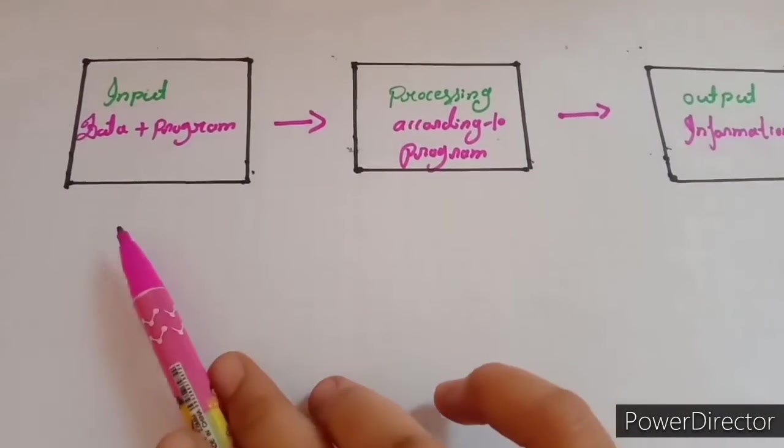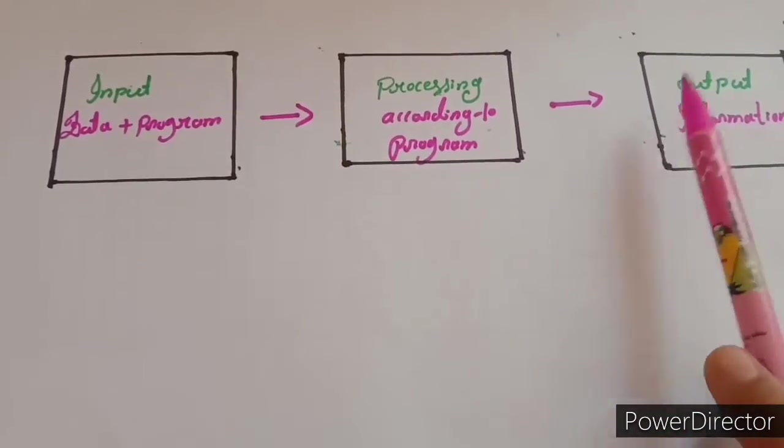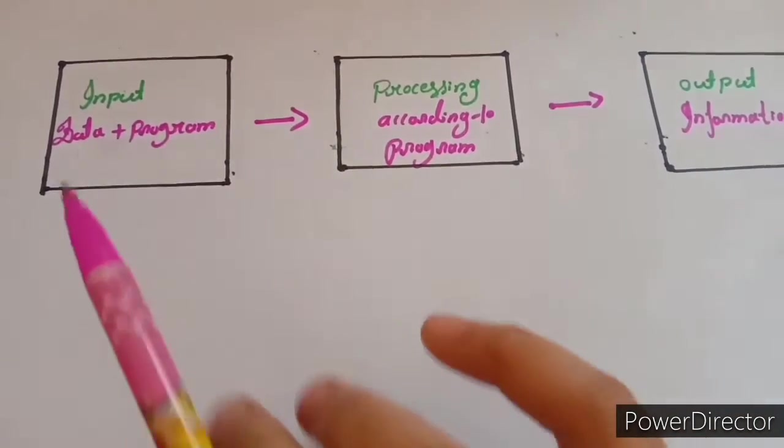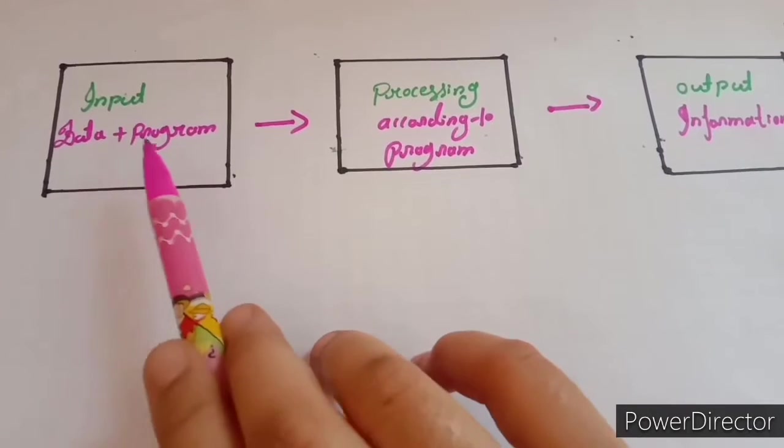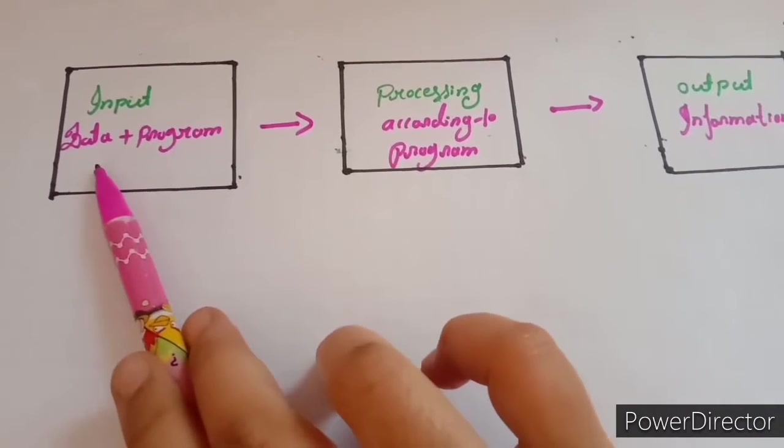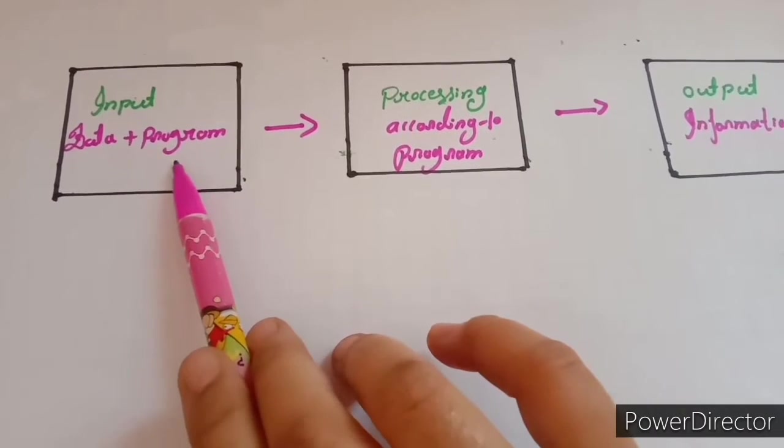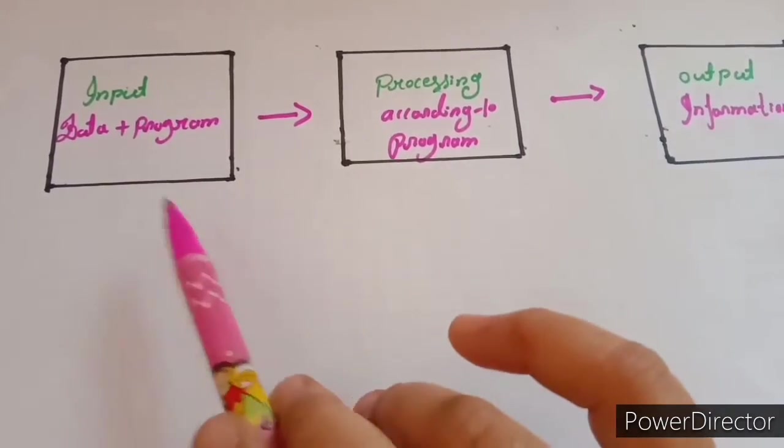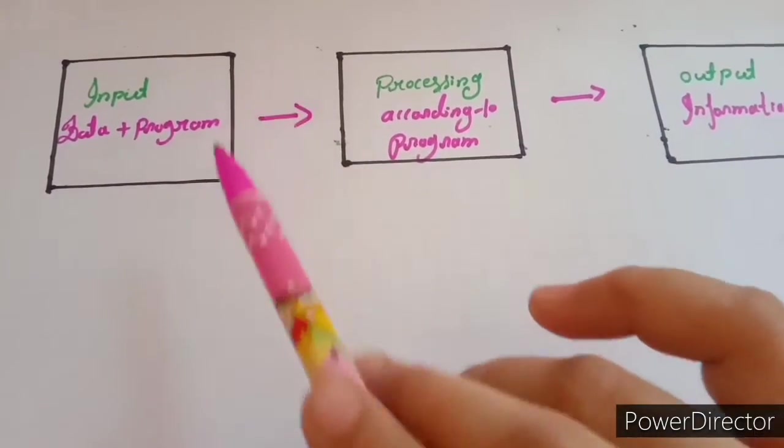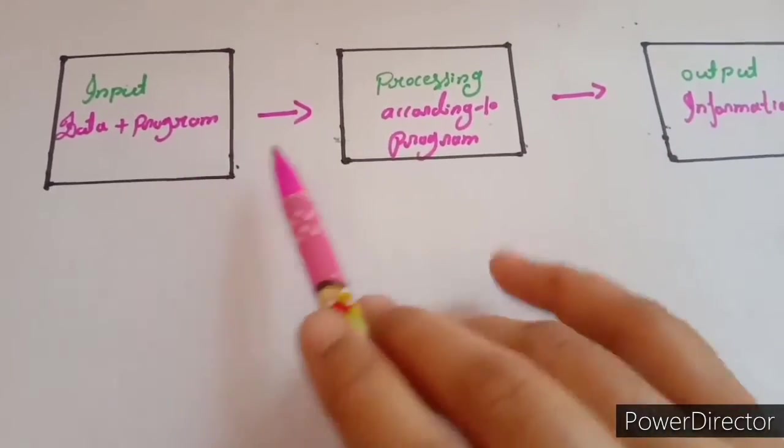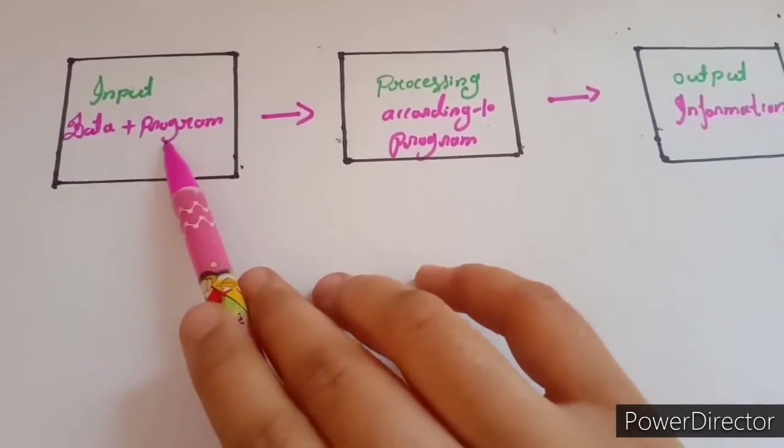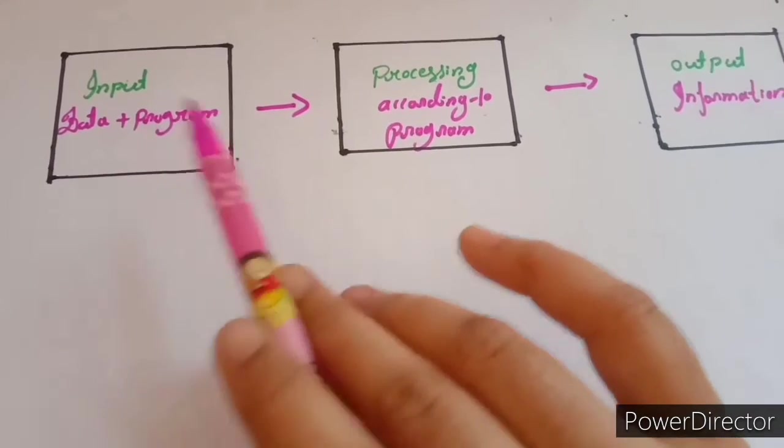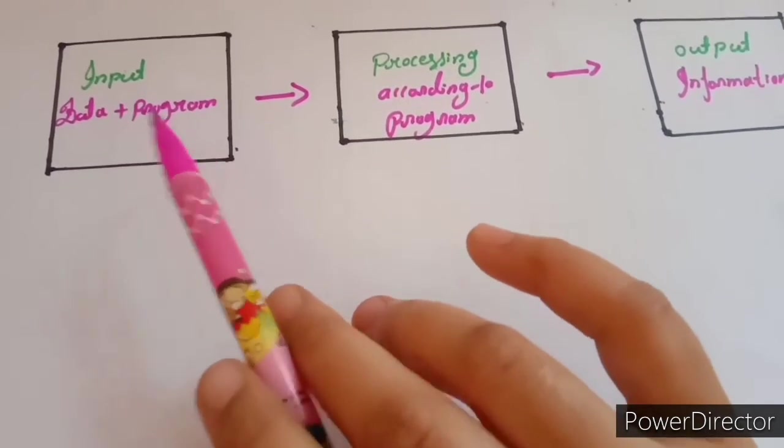In computer terminology, Input, Processing, And output Can be defined as follows. Let's explain one by one. Input: Data Plus Program. Data entered into a computer Is called input. It could be numbers, Letters, Pictures, Or even sounds. Next, Program: A set of logical instruction given to a computer To perform a task or work on the data Is called program.